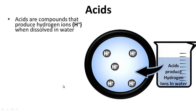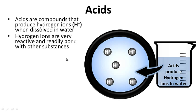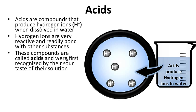Acids are compounds that produce hydrogen ions when dissolved in water. If something is acidic and it's a liquid, it has all these hydrogen ions floating around. Hydrogen ions are very reactive and they readily bond with other substances. These compounds are called acids and were first recognized by their sour taste of their solution.